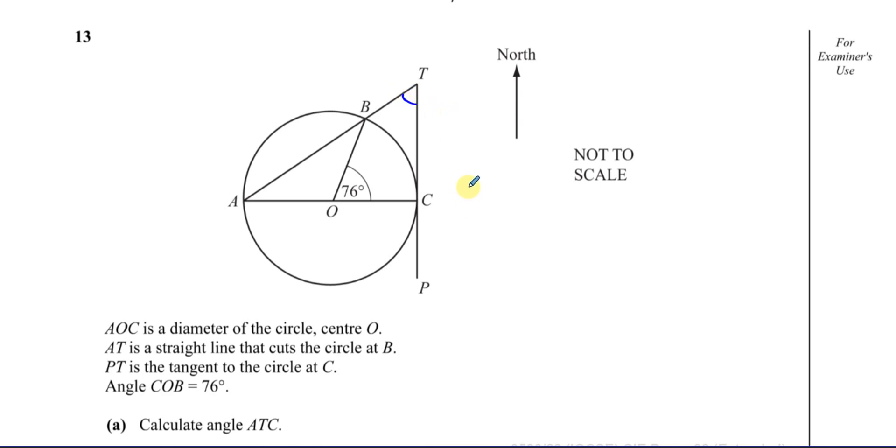One of the things that we should know about angles in circles is that when you have a radius and you have a tangent meeting on the circumference of the circle, this tangent meets the radius OC at the circumference, they always meet at right angles. So we can say the angle ACT is equal to 90 degrees.